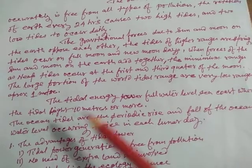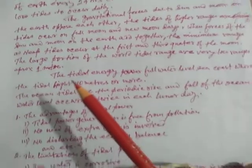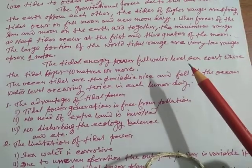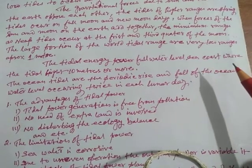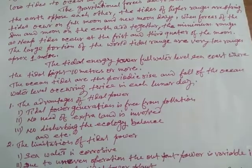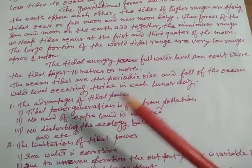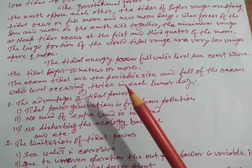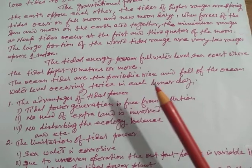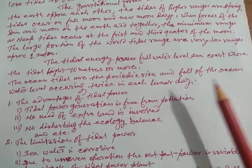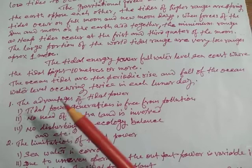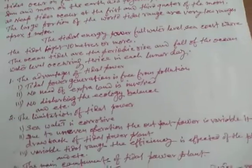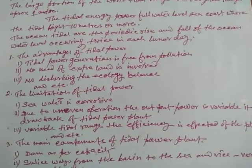The large portion of the world tidal ranges are very low, approximately one meter. The tidal energy power requires full water level at sea coast where the tidal range is higher than 10 meters or more. The ocean tidal are periodic rise and fall of the ocean water level occurring twice in each lunar day.